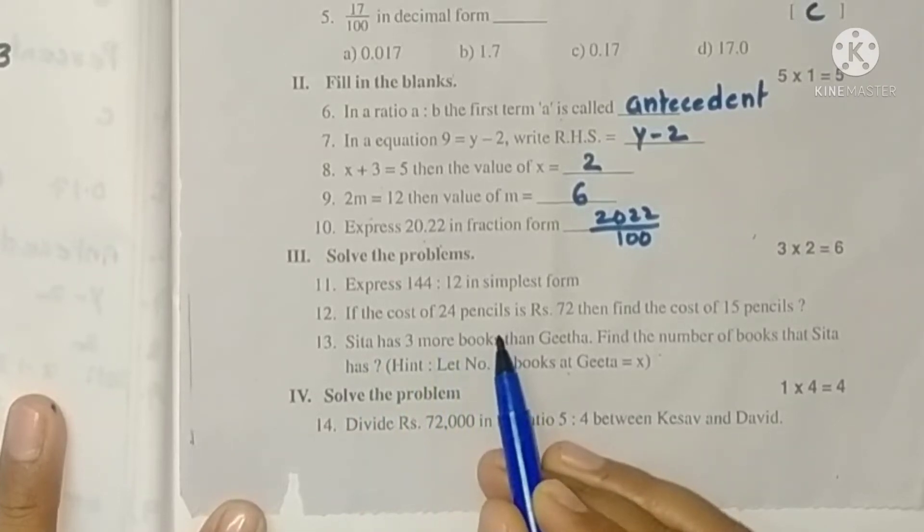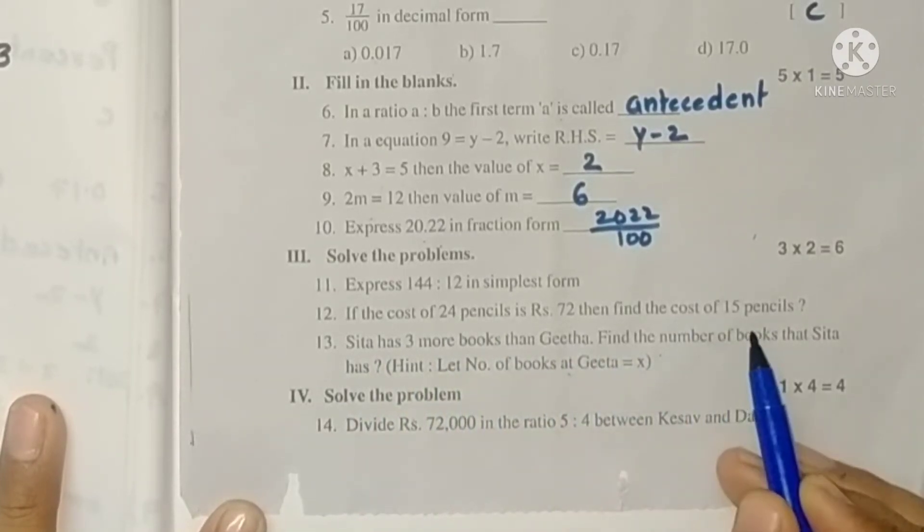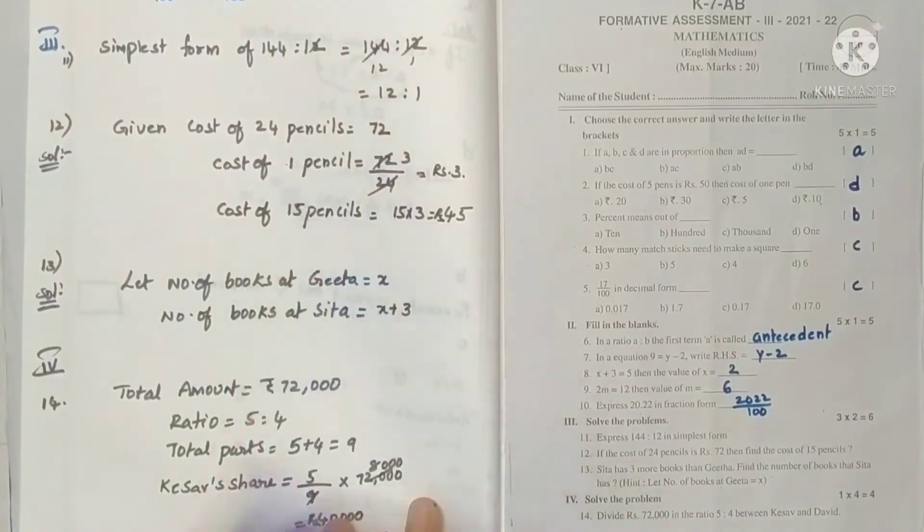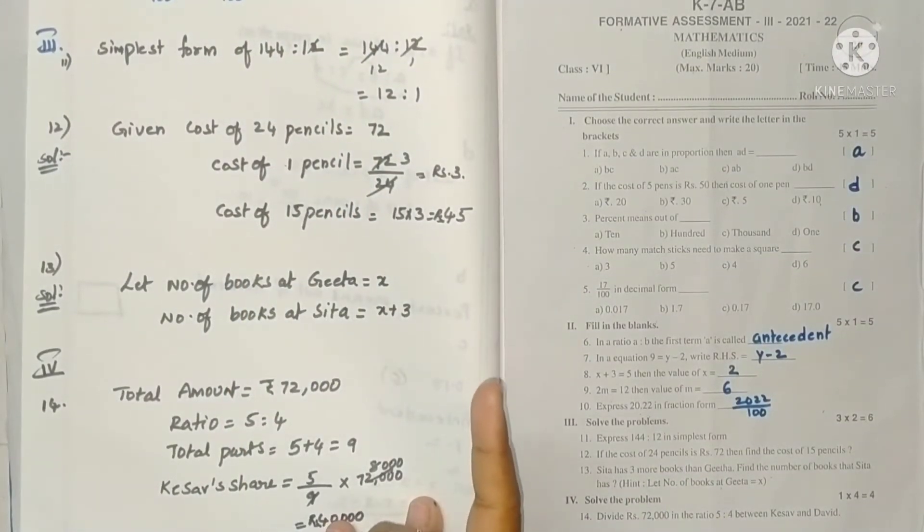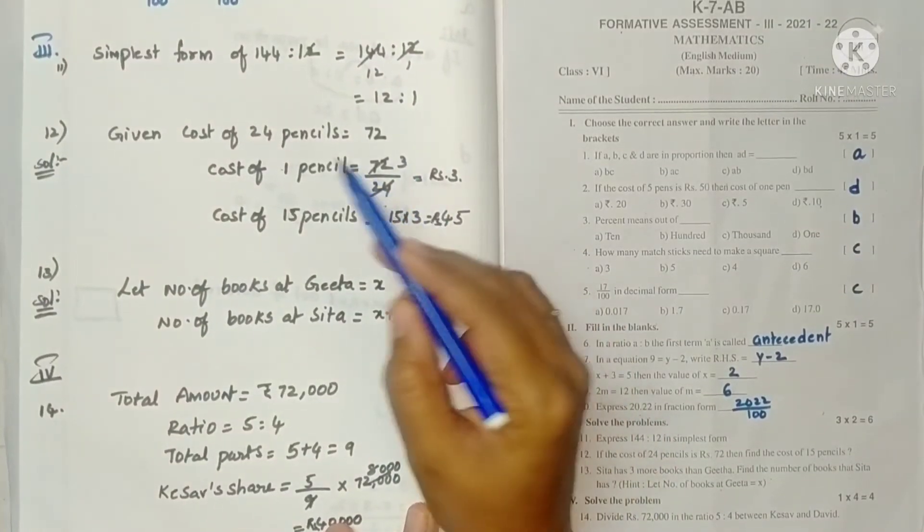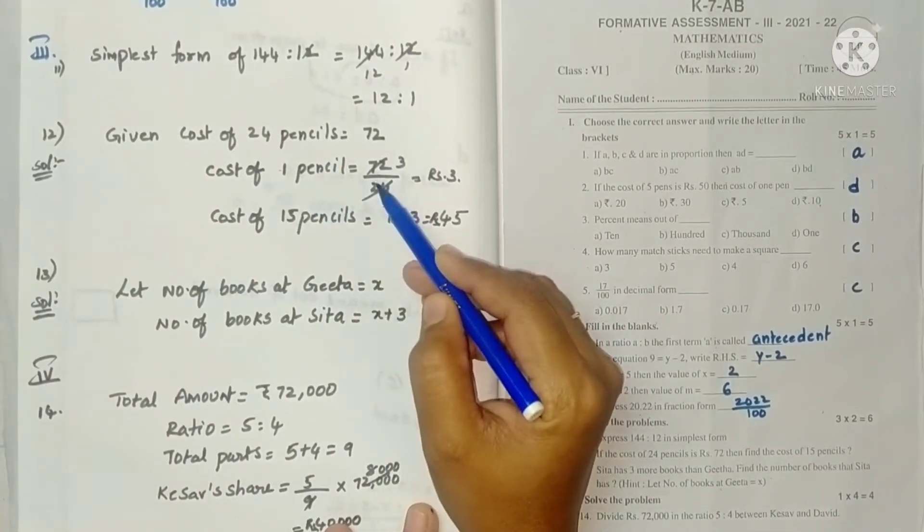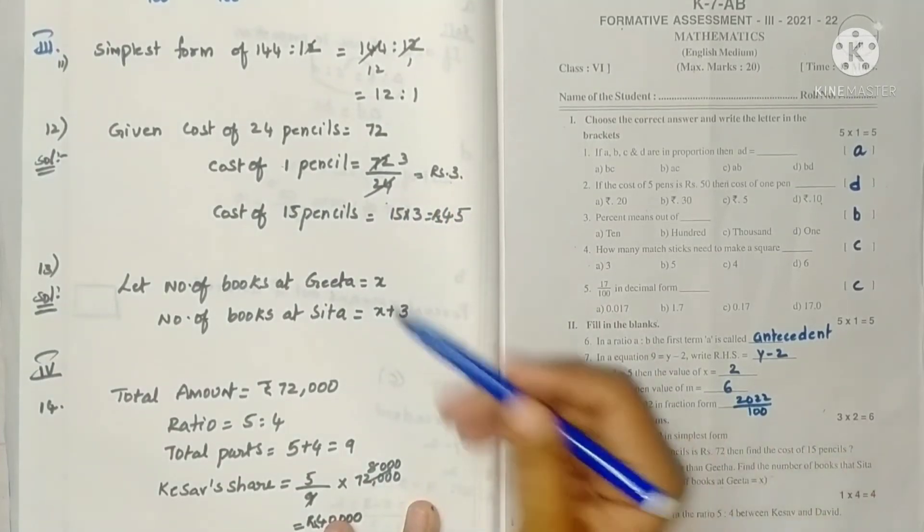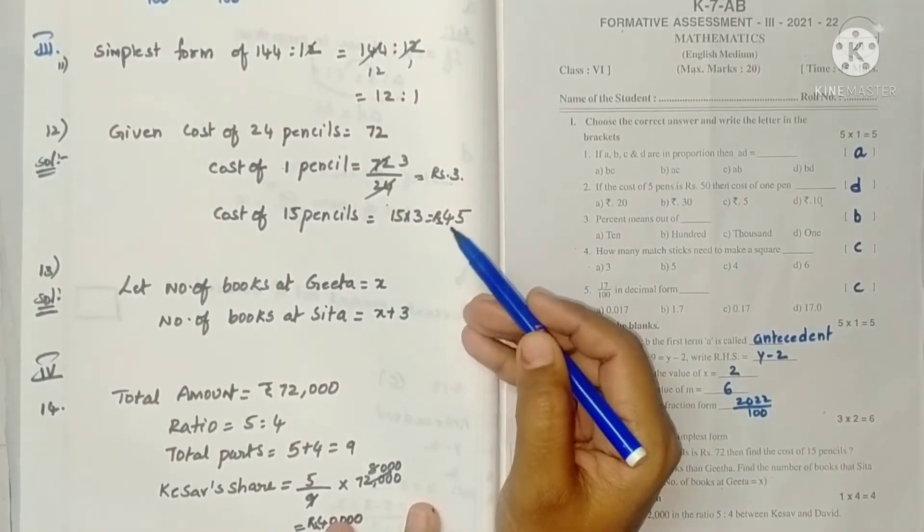If the cost of 24 pencils is 72, then find the cost of 15 pencils. So 24 pencils cost this much. First we find one using unitary method. So division. Then we find 15 pencils by multiplication.